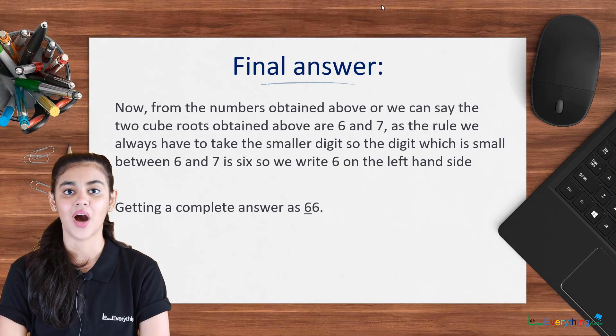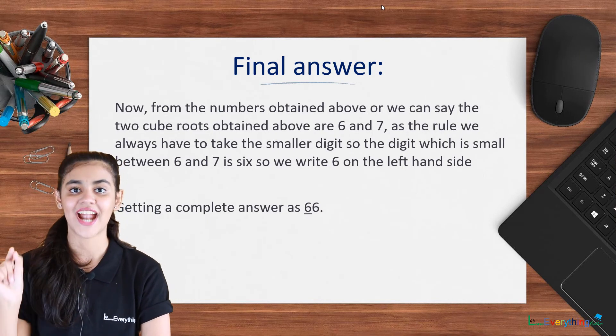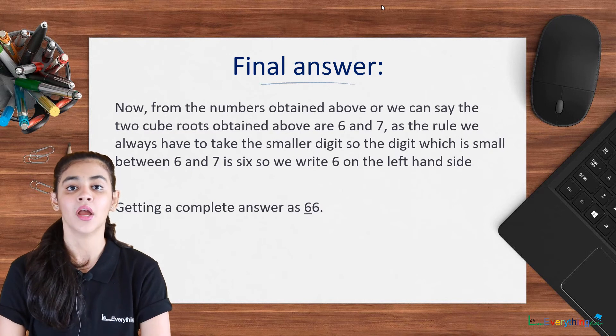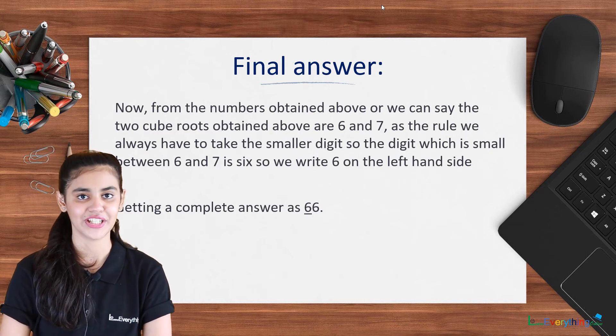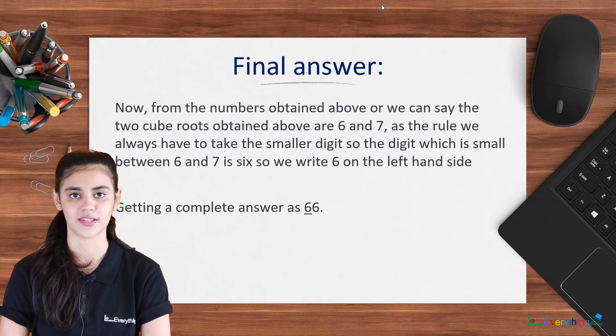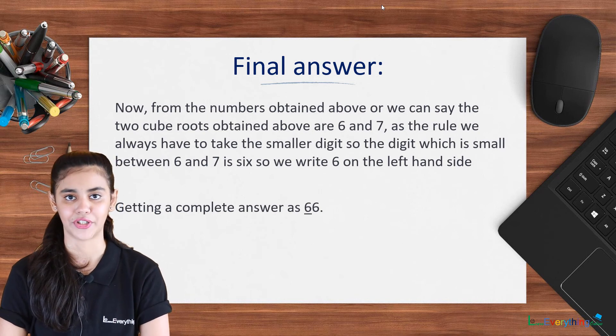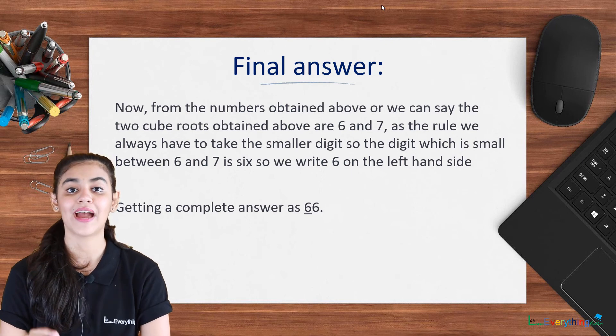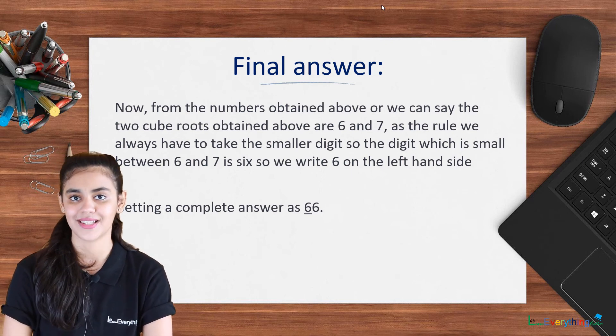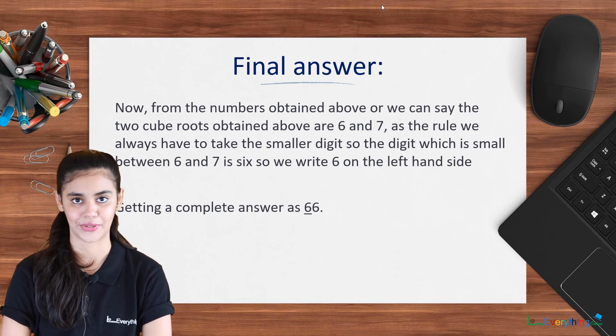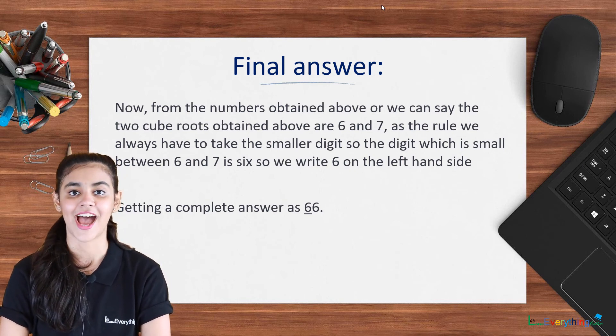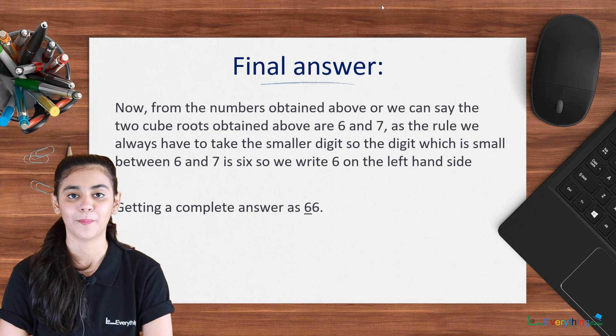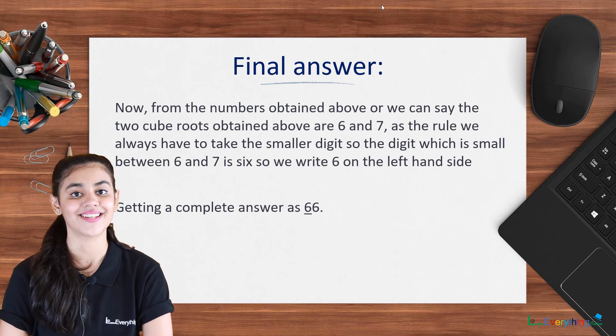So as of now our answer was a dash and 6 on the right hand side but after doing the part on the left hand side we have got two answers 216 and 343. The roots of 216 and 343 are 6 and 7. So we have to always take the smaller number. The smaller number between 6 and 7 is 6. So we fill the dash with the 6 and we get a complete answer as 66.